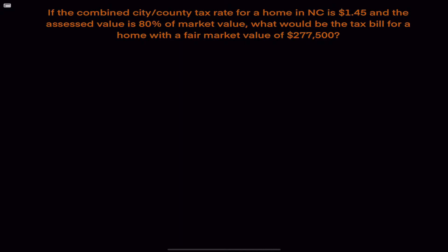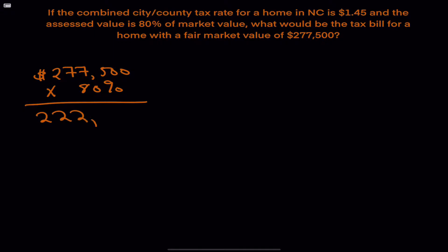The first thing we want to do is use that 80%. We know the fair market value is $277,500. We multiply that by 80% and we get $222,000. That is going to be our assessed value.